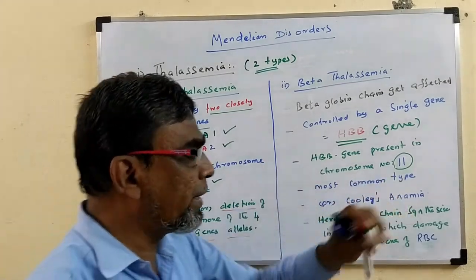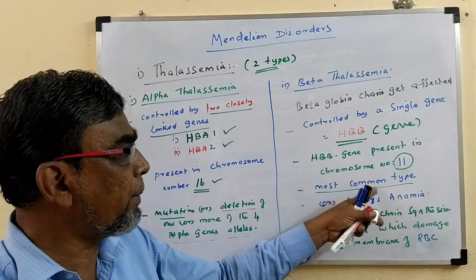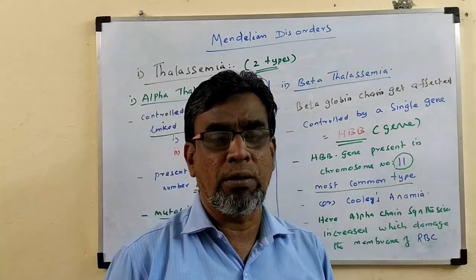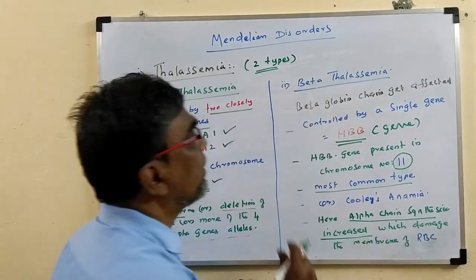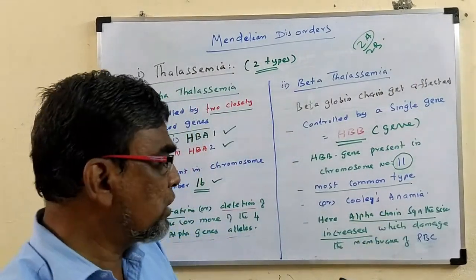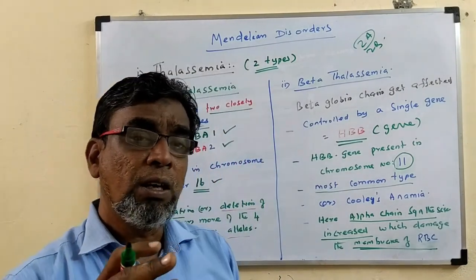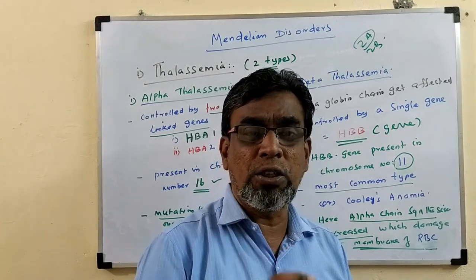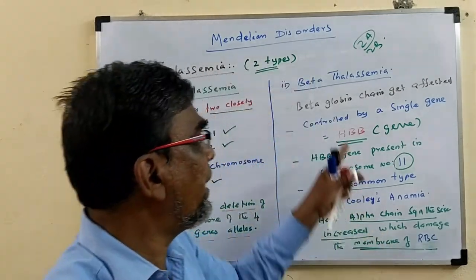Out of these two types, Beta Thalassemia is the most common type. In the normal condition there are two alpha chains and two beta chains. But in this condition, the alpha chain synthesis increases. Because of excess alpha chains, this leads to destruction or damage of the RBC membrane. The excess alpha chains cause damage to the membrane of RBC, so destruction of RBC takes place. The membrane of red blood cells, which carries oxygen, is destroyed or damaged by Beta Thalassemia.